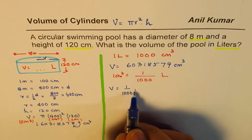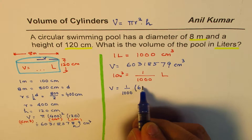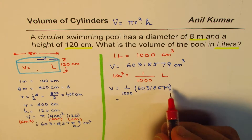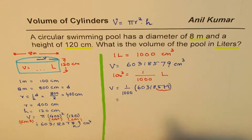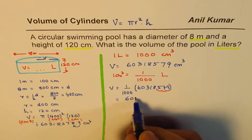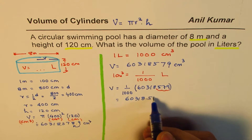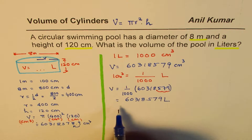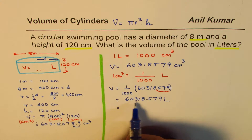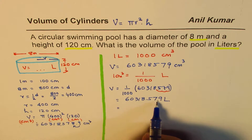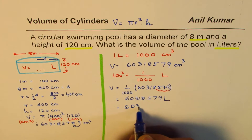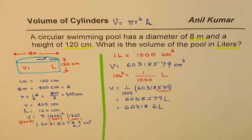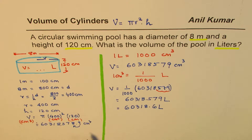Dividing by 1,000 means moving the decimal three places, so we get 60,318.579 liters. When talking about liters we can round it further — so it is approximately 60,318.6 liters. That becomes the volume in liters after converting the units to centimeter cube.